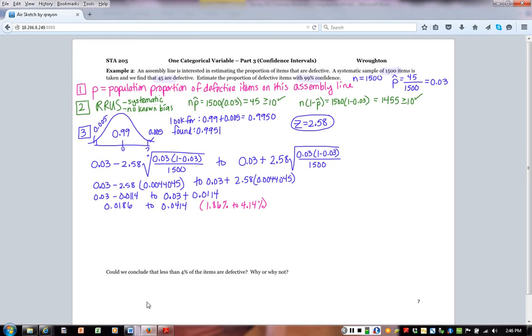And that's our last step, is to interpret. So we get to say how confident we are. So I am 99% confident that between 1.86% and 4.14% of this assembly's items are defective. Nothing new so far, just another example.